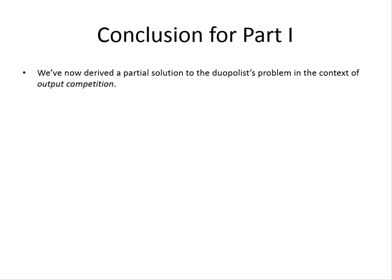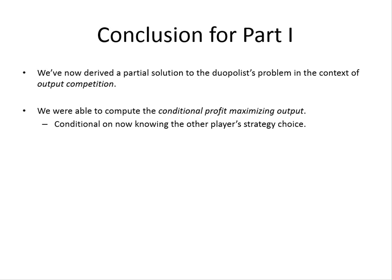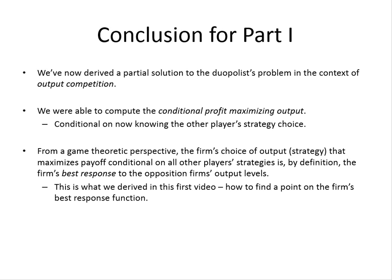We've derived a partial solution to the duopoly problem in the context of duopolies competing by setting output as the strategic variable. We were able to compute the conditional profit-maximizing output — conditional on not knowing what the other player's strategy is. From a game-theoretic perspective, what we figured out today was essentially the best response of firm one: the output level that maximized our profit and gave us the highest payoff for this game given the other player's strategy, which was some arbitrary quantity choice for the other firm.